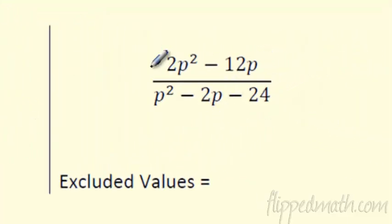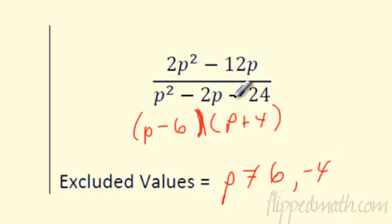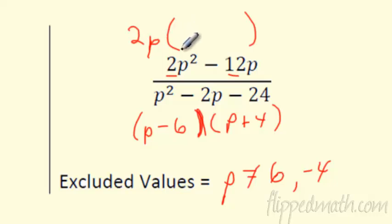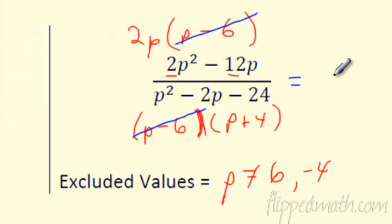Can I simplify this one? I hope so. I can't really look at this and tell you the excluded values, but if I factor it — what multiplies to 24 and adds or subtracts to 2 — I'm going to guess it's minus 6 plus 4. My excluded values: P cannot equal 6 or negative 4, because those make the bottom zero. Does the top factor? Yeah, I can pull out the greatest common factor — undistribute. Pull out 2P, and I'm left with P minus 6 inside. I factored that out, and this cancels this. We get 2P over P plus 4.